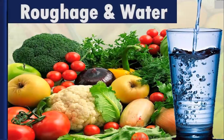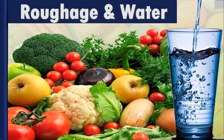Besides nutrients like carbohydrates, fats, proteins, vitamins and minerals, our body also needs dietary fibers and water. Dietary fibers are also known as roughage, which is mainly provided by plant products. Whole grains, pulses, potatoes, fresh fruits and vegetables are main sources of roughage. Roughage does not provide any nutrient to our body but is an essential component of our food, adds to its bulk, and helps our body to get rid of undigested food.